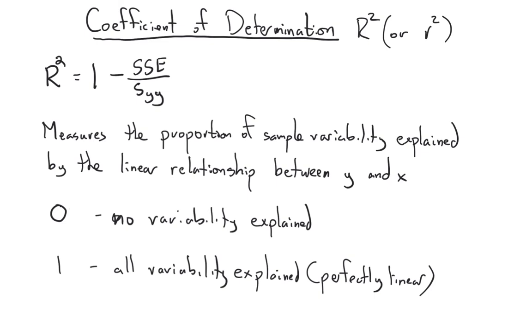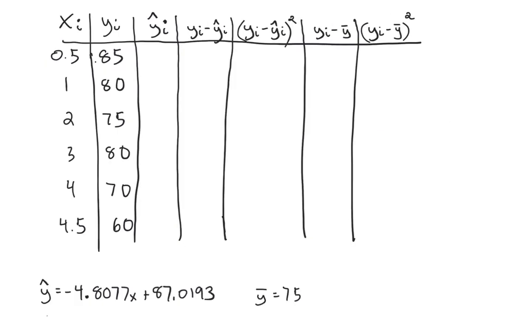So let's do a little example, in fact let's do the data that we looked at in the previous video. If you remember from our previous video we were looking at the average number of hours per week that somebody exercised versus their resting heart rate, and from that we calculated the following regression equation: negative 4.8077x plus 87.0193. And just as a reminder, the average y value we can calculate as 75.